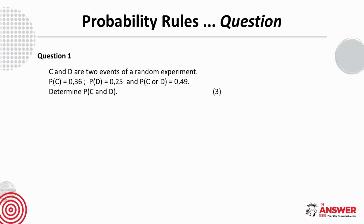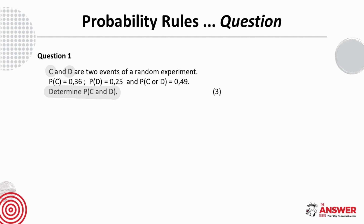In question 1, C and D are two events of a random experiment. The probability of C is 0.36, the probability of D is 0.25, and the probability of C or D is 0.49. They are asking us to determine the probability of C and D. Whenever we're given a question, we look at the information we are given and match it with the knowledge we have on this section. Pause the video here as you think about what you know and then give this question a try.